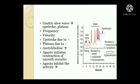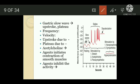Gastric slow waves are in the form of an upstroke and a plateau, as seen in the diagram. The frequency is 3 to 4 per minute and the velocity of these waves is 1 cm per second, with a maximum of 3 to 4 cm per second. The upstroke is due to the entry of sodium and calcium ions into the cell, and the plateau is due to the flow of calcium ions into the cell.